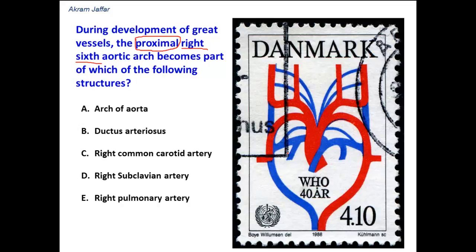Let's look at this diagrammatic representation shown on the stamp. There are 6 aortic arches. We can immediately predict that the 1st and 2nd aortic arches disappear and have no derivatives. The 3rd and 4th persist, the 5th disappears, and the 6th aortic arch will partially remain. So we are left with the 3rd, 4th, and 6th aortic arches.